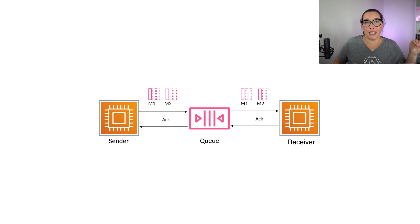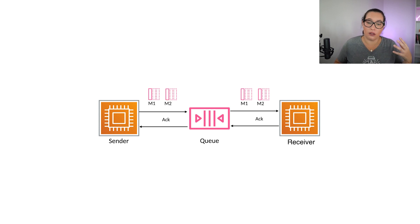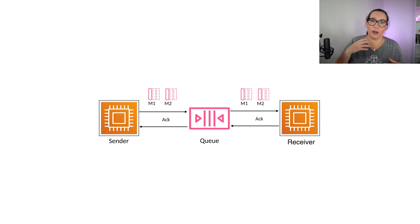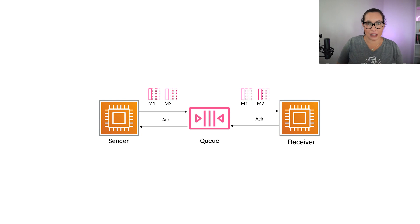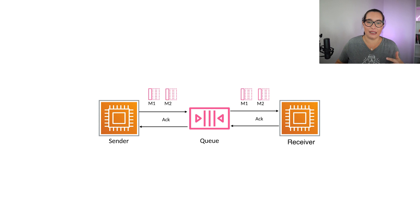The messages will persist in the queue until the consumers process them, or they get deleted from the queue. For example, if there are retry policies and the message cannot be sent to the consumer, in the ideal case the message goes through and gets deleted.